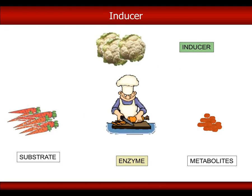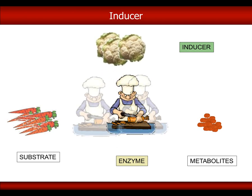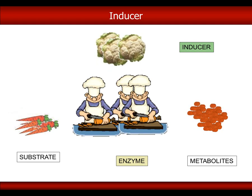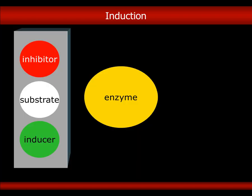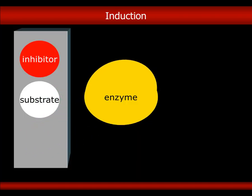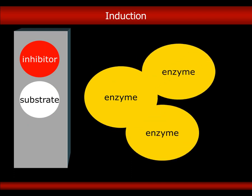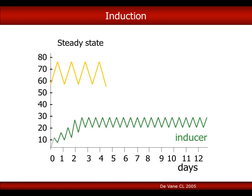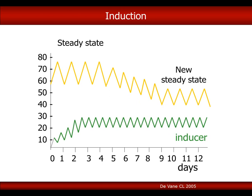Finally, let's see what happens if we add an enzyme inducer — for example, cabbage. Many brassicas, such as cabbage, contain enzyme inducers. The cook will be multiplied, and this will allow it to work faster. Carrots will decrease and slices will increase. The inducer binds to the enzyme and gives a signal to the cell that produces other enzymatic units. In the presence of an inducer, the substrate steady state will decrease in a few days.